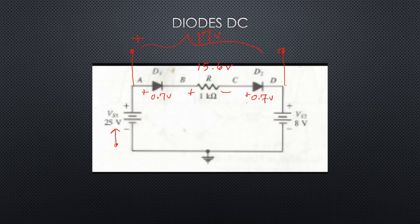The next thing to do in order to know specific voltages at specific points — for example V_A, V_B, V_C, and V_D — all we need to do is write new Kirchhoff equations from those points to reference. For example, V_A: going through the supply gives plus 25 volts, and going the other direction gives 0.7 plus 15.6 plus 0.7 plus 8, which also equals 25 volts. Then do the exact same thing from points B, C, and D.